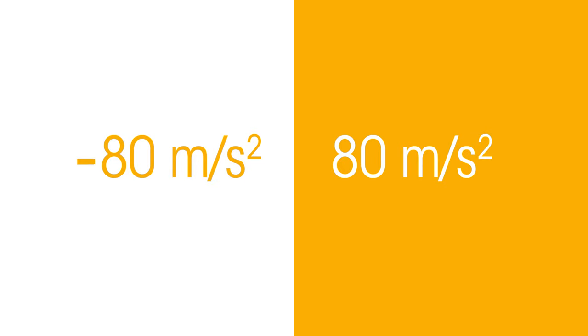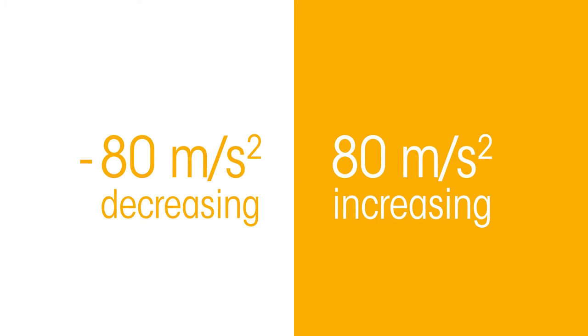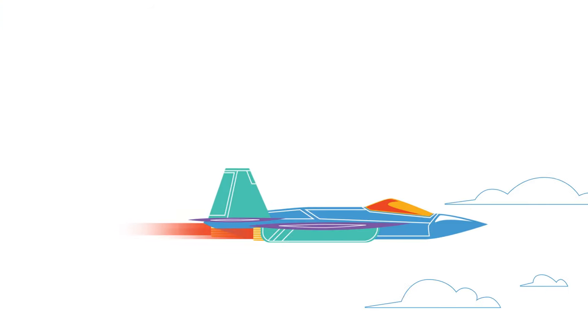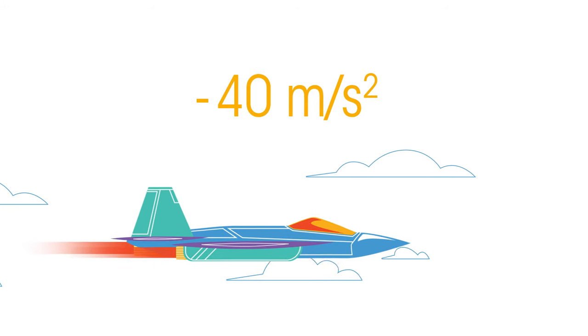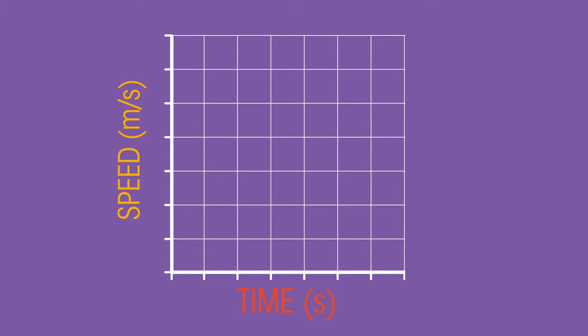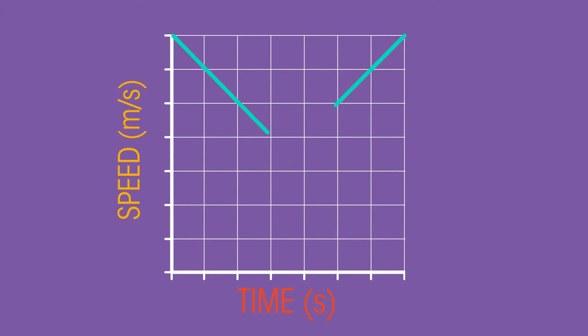The sign in front of an object's acceleration indicates whether the object's speed is increasing or decreasing. If an airplane's acceleration is negative 40 meters per second squared, its speed is decreasing. The gradient of a line on a speed-time graph represents acceleration — if the gradient is positive or goes up, the object has a positive acceleration; if the gradient goes down, the object has a negative acceleration, or deceleration.